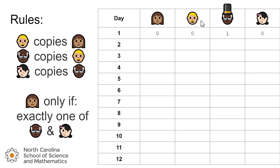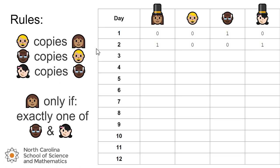The man with the white hair and glasses will look to his left and see no hat, so tomorrow he'll copy the blonde man and not wear a hat. The woman with the bow in her hair will look to her left and see that he's wearing a hat, so tomorrow she'll wear a hat. The woman with brown hair looks at both the two rightmost people — since exactly one of them is wearing a hat, tomorrow she will wear a hat. Now the first and last person are wearing hats and the middle two are not.